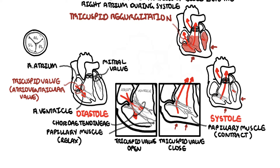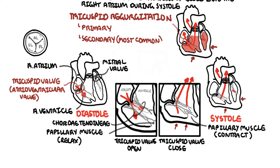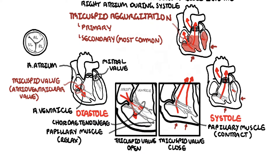Tricuspid regurgitation is characterized by backflow of blood into the right atrium during systole. It can be classified as either primary or secondary. Secondary, also known as functional tricuspid regurgitation, is the more common cause.